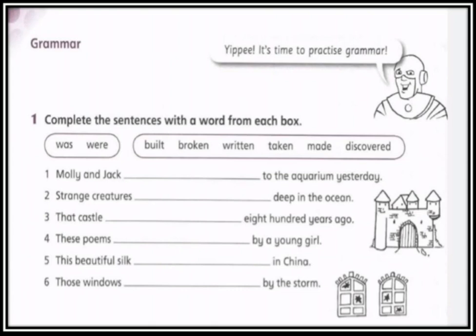Let's start with the first one. Molly and Jack — هؤلاء هم المفعول به وهو اسم جمع — سوف نستخدم 'were': were taken to the aquarium yesterday. Number two: strange creatures deep in the ocean — creatures جمع — فإذن يكون عندنا الفعل المساعد 'were': were discovered.